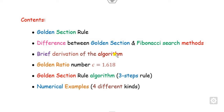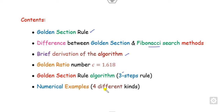The brief content is that we will firstly discuss what is the golden section rule, how it differs from the Fibonacci series method, and how they can be derived. Later we will see what is the golden section number and then discuss the three simple steps rule, explained with the help of four numerical examples.